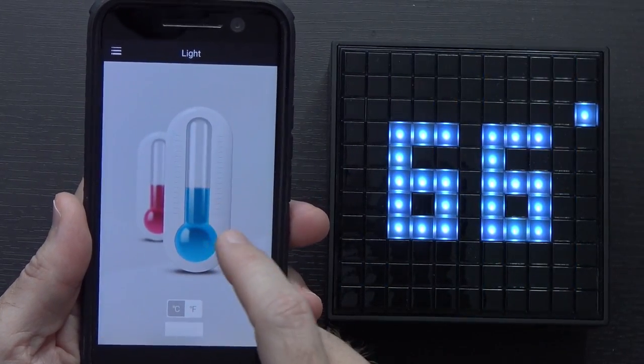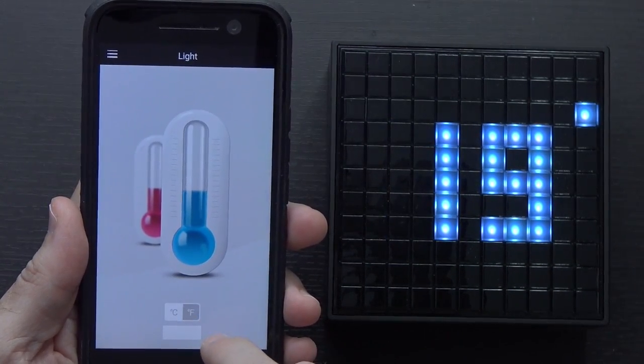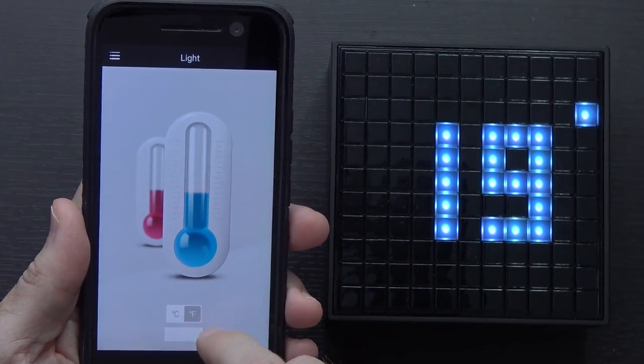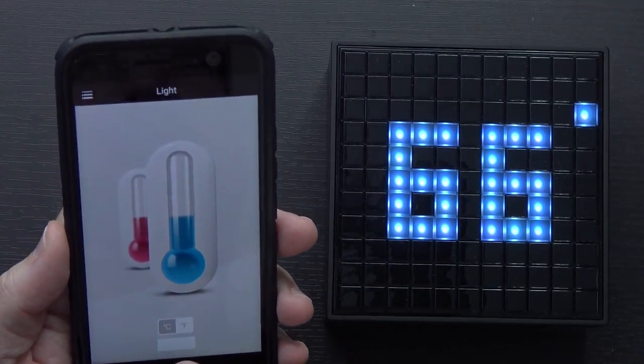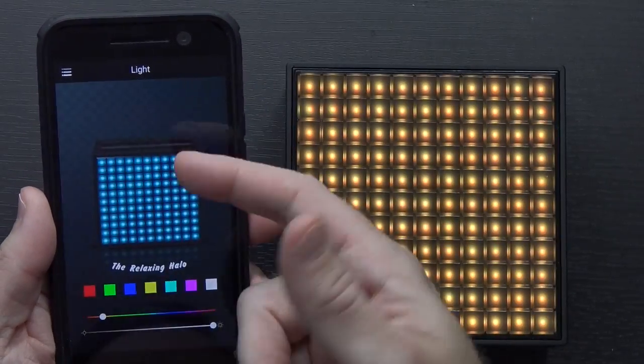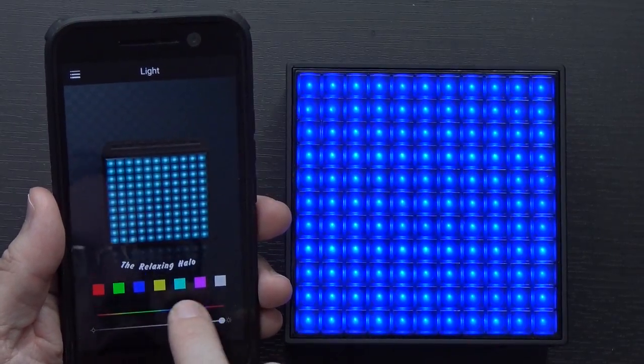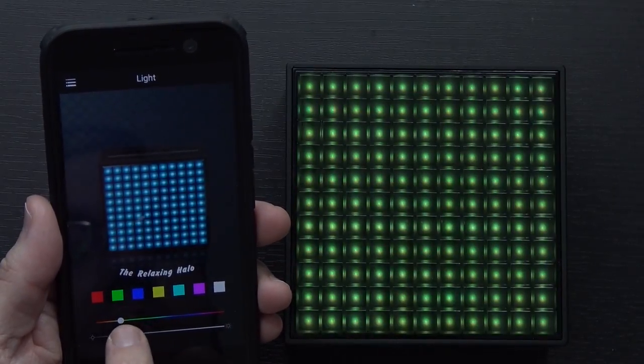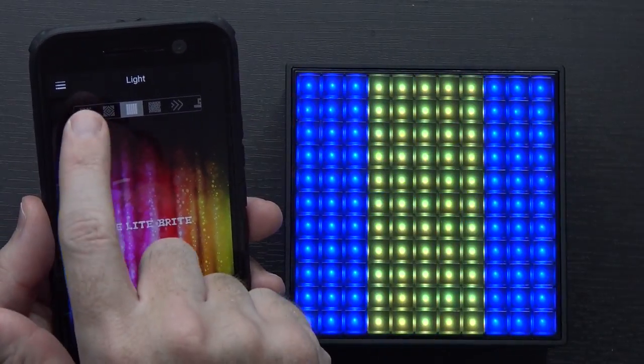You can also change the color by clicking here. You can make the clock whatever color you want it to be. Swipe over, we go to temperature. Right now it's set to Fahrenheit. I switched that, you can change it back to Celsius if you'd prefer. And again you've got that option to change the color of the temperature there. You can see from here different relaxing light setups. So you can make this whatever color you'd like it to be and whatever brightness you'd like it to be.